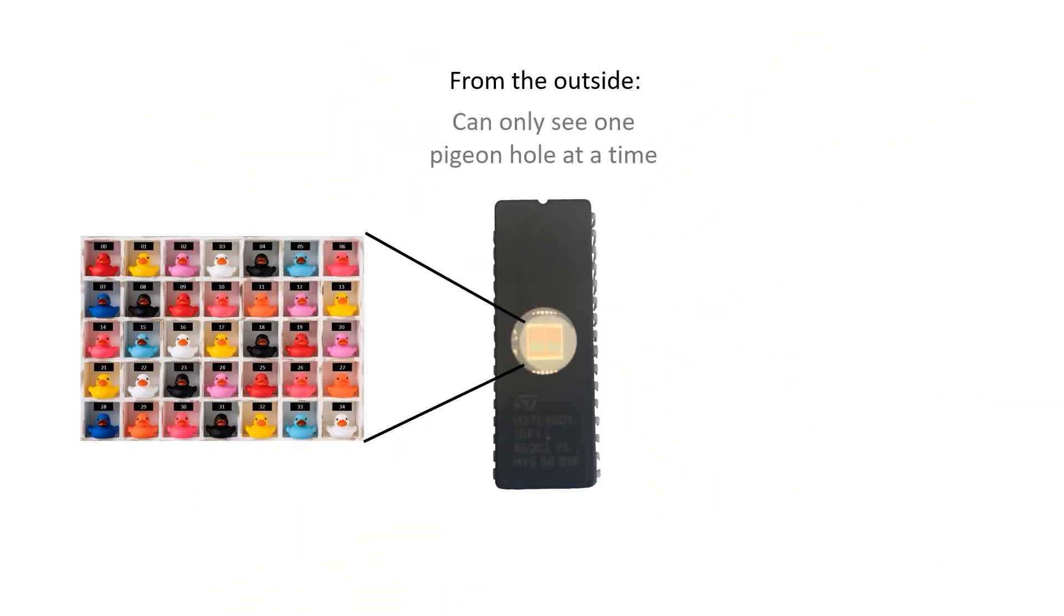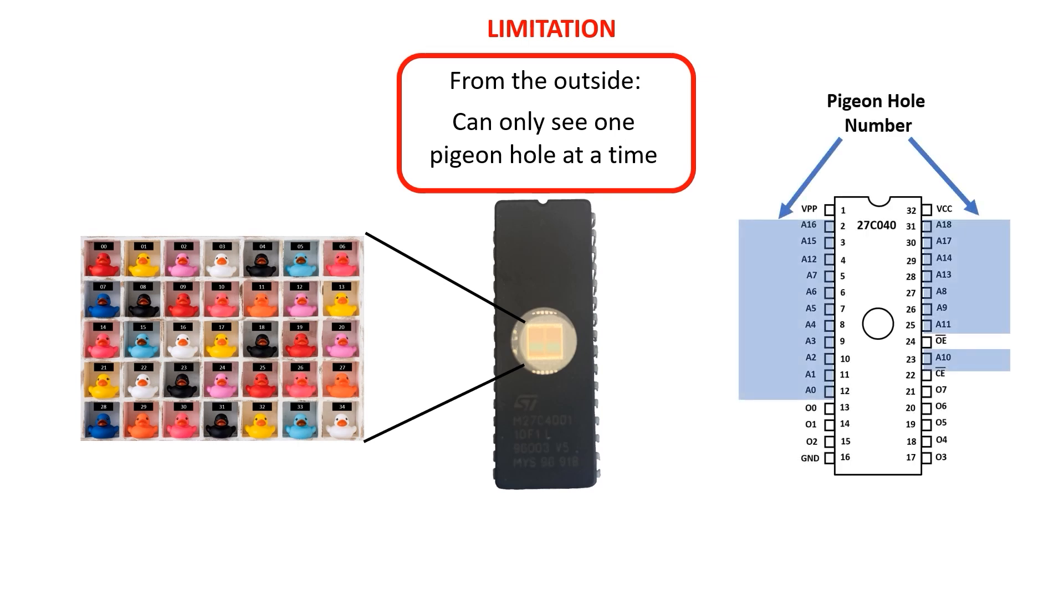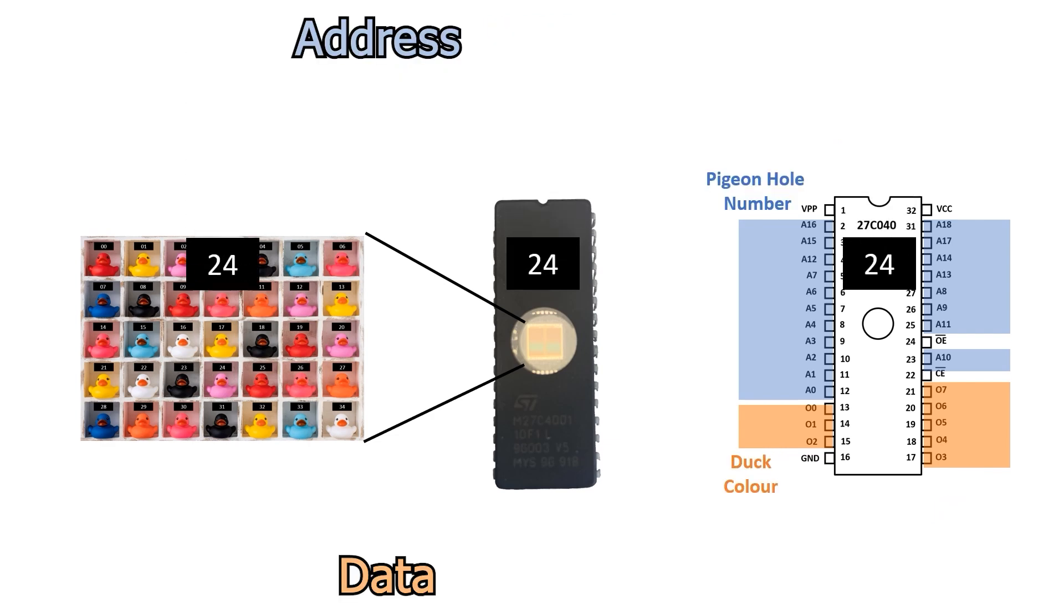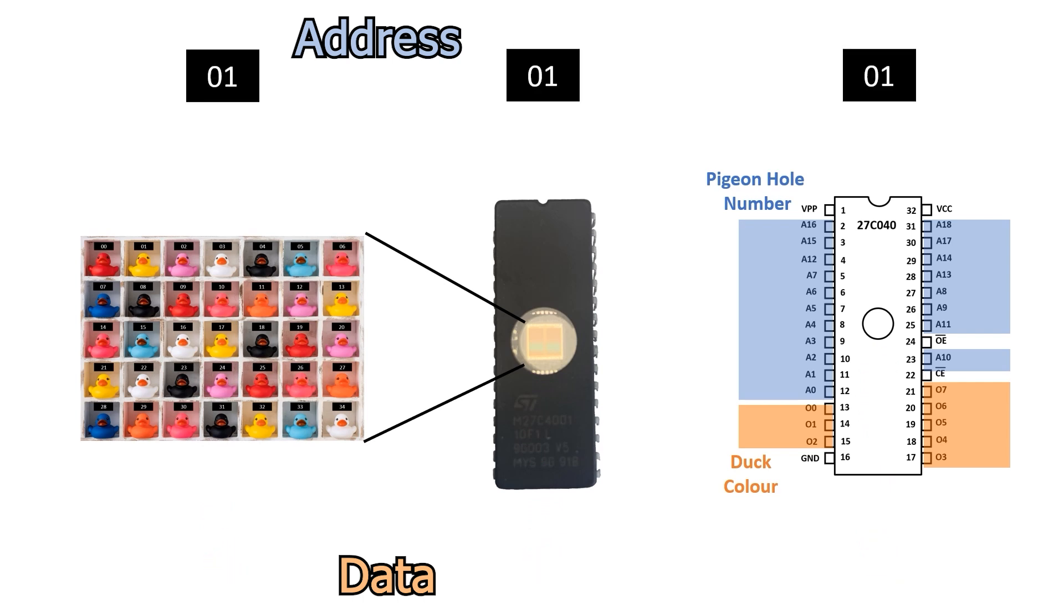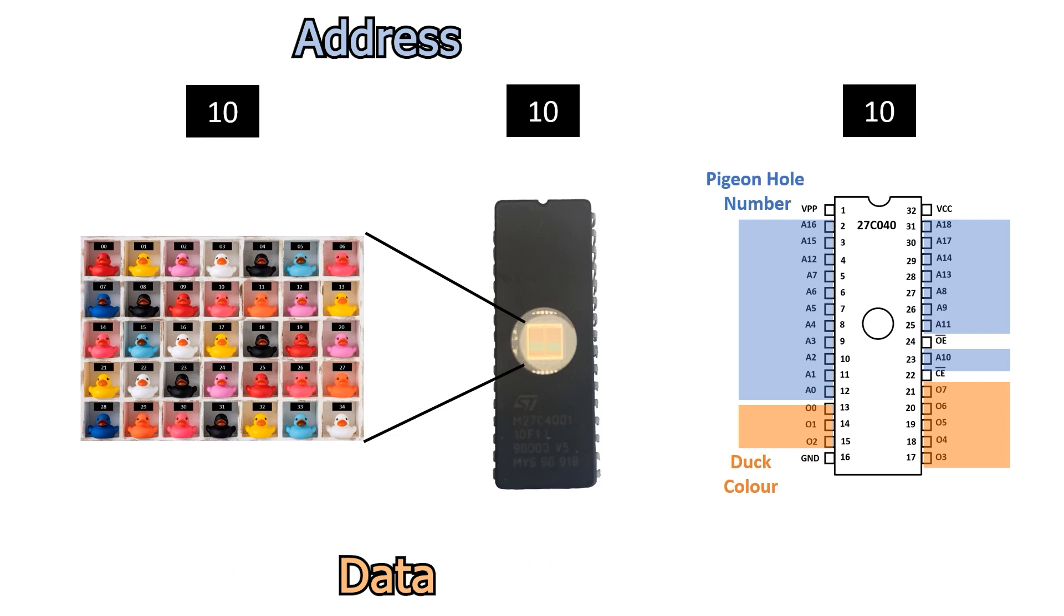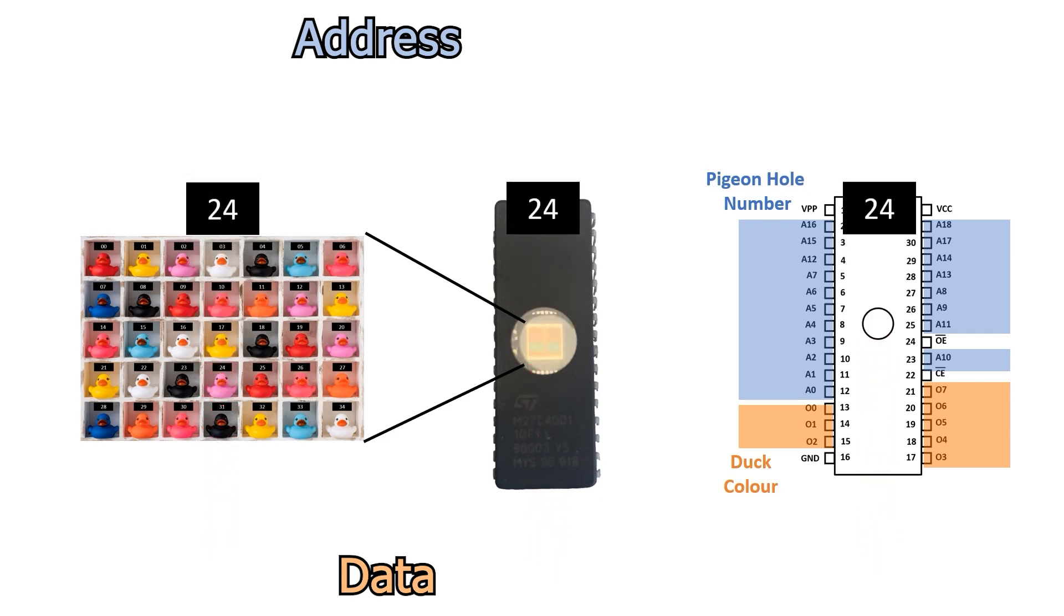This chip's an EEPROM, a type of memory. We can only look up one piece of information at a time. If we provide a pigeonhole number, written in binary on the address lines, the EEPROM outputs the corresponding duck color, also in binary on the data lines. In normal operating mode, we can only read pre-stored data from an EEPROM. It's pretty straightforward. We provide the address of the memory cell we're interested in as a binary number on the address lines, then a short time later, the information stored at that location is presented on the data lines by the EEPROM. That's pretty much it. Change the address, and the data lines are updated with the information stored at this new address.